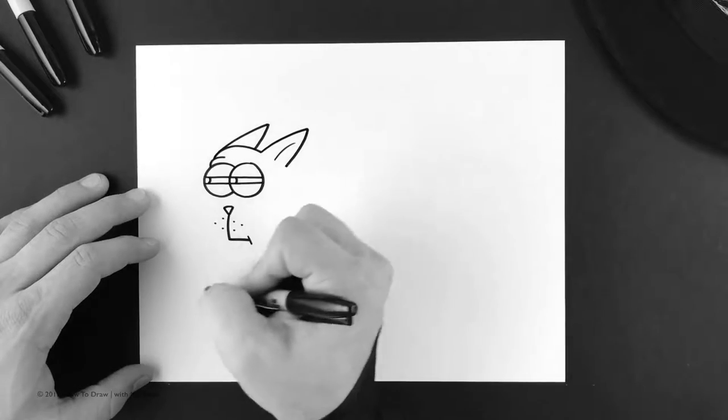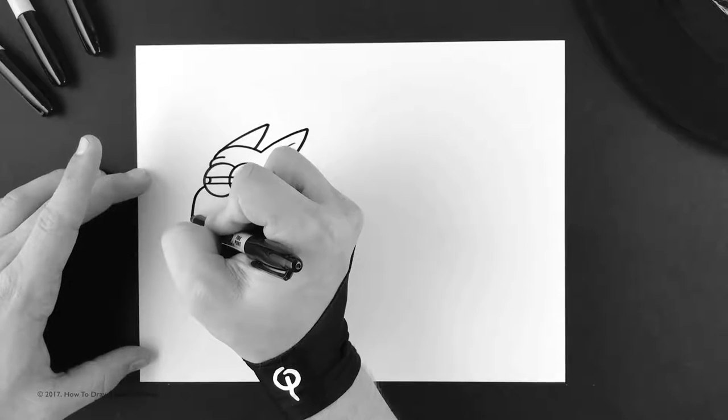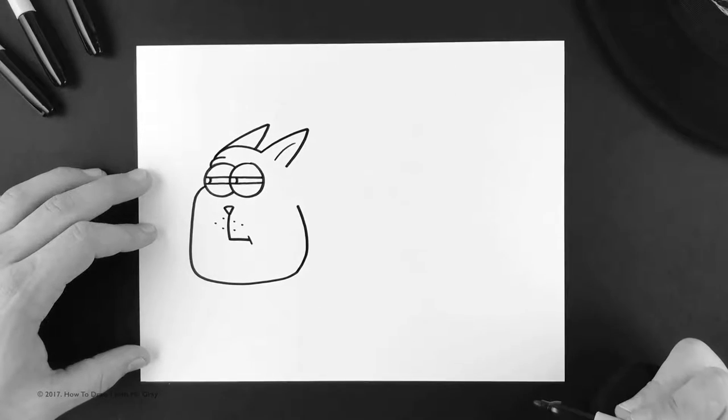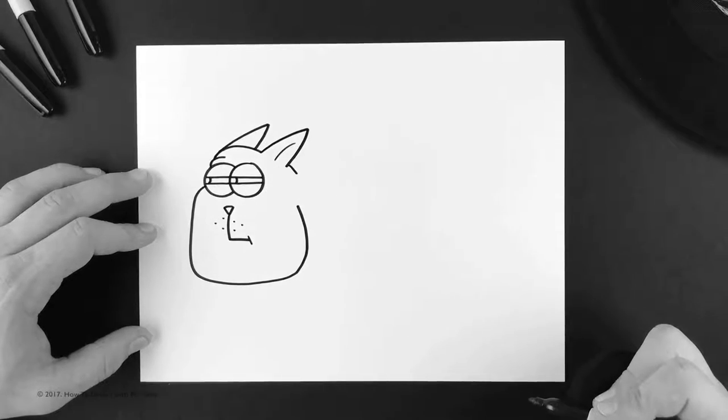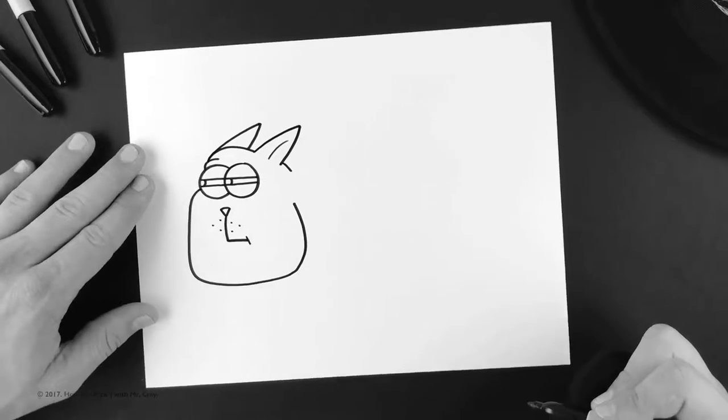his head. So we're gonna do one of these shapes. We come off here, down, cross, back up like that. Then you put the back of his head coming off of the ear like that.